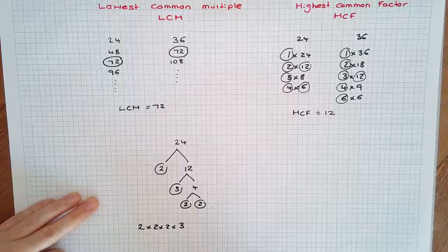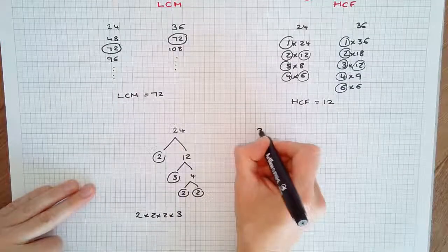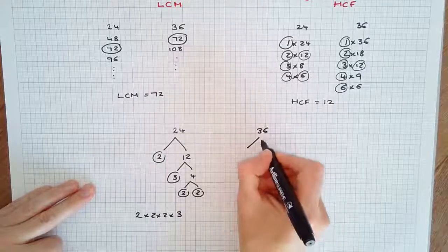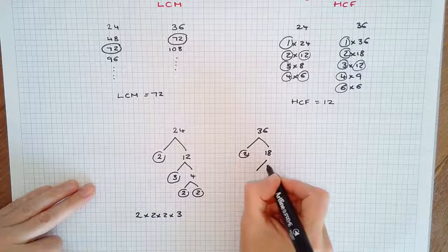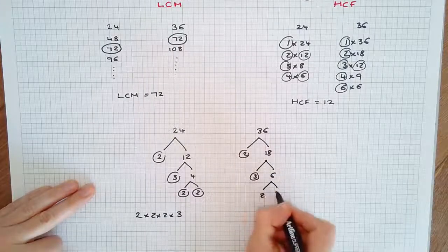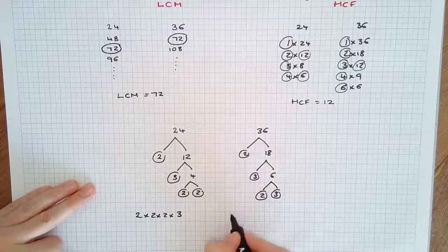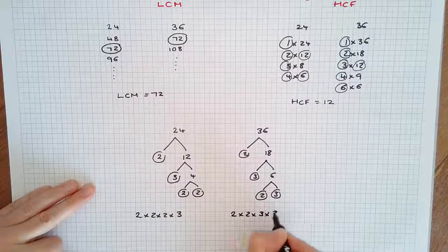I'm not going to put it in index notation for the moment. Let's do the same for 36. 36, 2 times 18. 18 can be divided, 3 times 6, and 6, 2 times 3, breaking it down into prime factorization of 2 times 2 times 3 times 3.